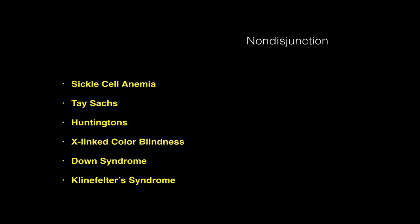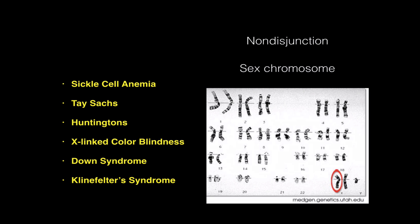Klinefelter syndrome is also caused by a non-disjunction, but it's caused by a non-disjunction of the sex chromosomes. It occurs in the mother, when the mother's pair of X chromosomes don't separate. So when she has a son, you end up with a son that has two X chromosomes from mom and a Y chromosome from dad — so this kid is XXY. Klinefelter syndrome doesn't cause any serious problems other than reproductive sterility and perhaps some mild effects. Klinefelter syndrome only affects males because they have the Y chromosome — there's no such thing as a Klinefelter female.